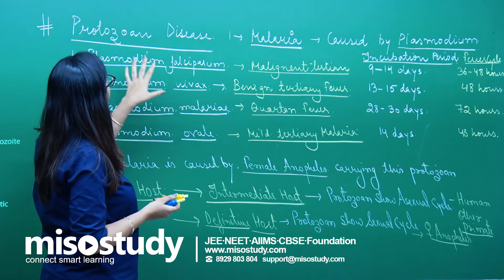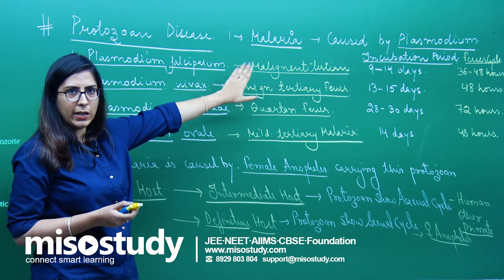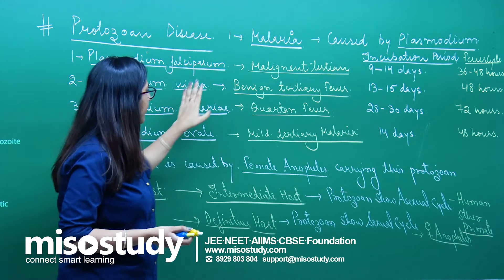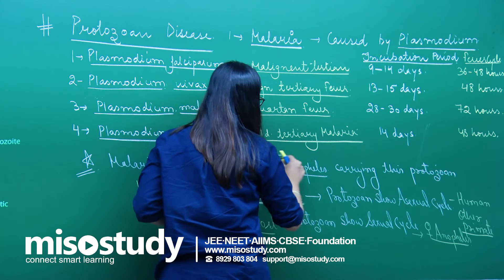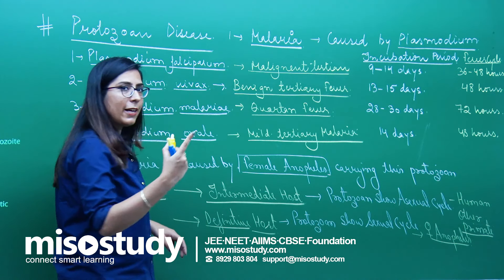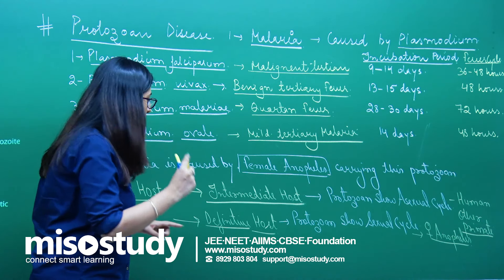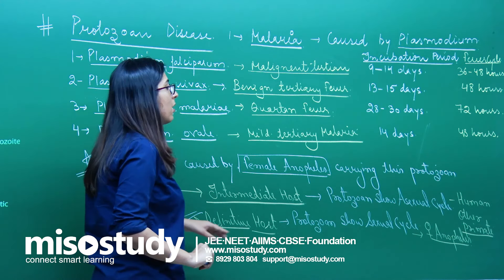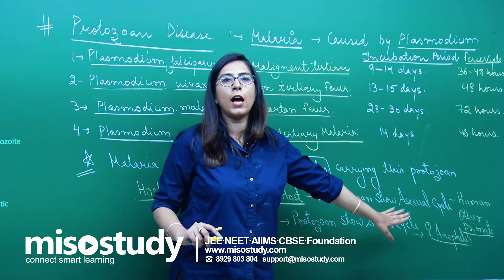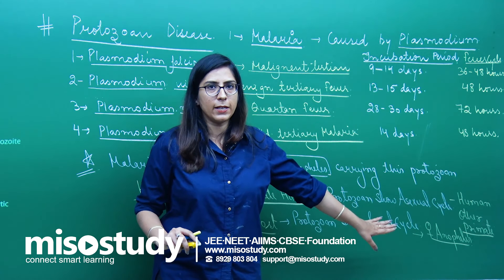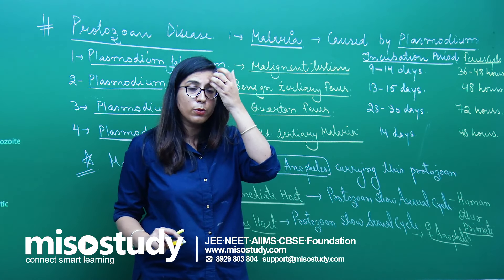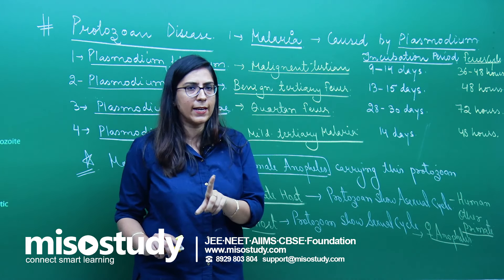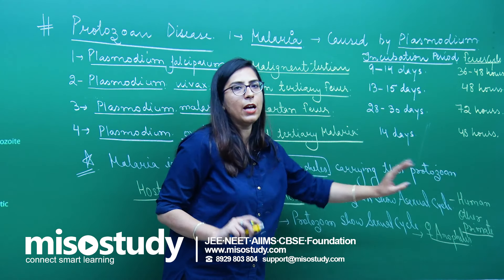This is a general introduction of the protozoan disease malaria. It is caused by plasmodium, there are different species of plasmodium, and it is actually caused through a vector — the female Anopheles — which is also a definitive host because the organism shows its sexual cycle in it. The intermediate hosts are humans and other primates, in which the protozoan completes its asexual cycle.